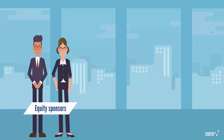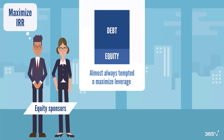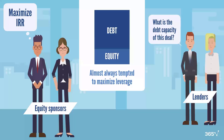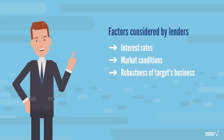Equity sponsors are the architects of an LBO transaction. Their goal is to maximize IRR for a given level of risk. Considering that the higher the leverage, the less equity sponsors need to invest, they are almost always tempted to use the maximum leverage possible. It is up to lenders to figure out the highest amount of debt they would be willing to provide for a specific LBO deal. Multiple factors play a role in this assessment: current interest rates, market conditions, the risk appetite of lenders, and the robustness of the target's business.